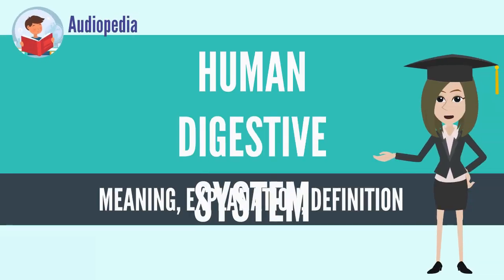The human digestive system consists of the gastrointestinal tract plus the accessory organs of digestion: the tongue, salivary glands, pancreas, liver, and gallbladder. Digestion involves the breakdown of food into smaller and smaller components until they can be absorbed and assimilated into the body.